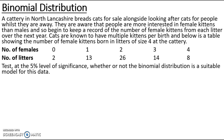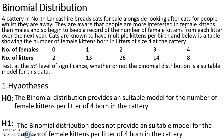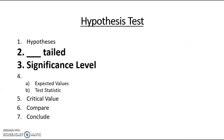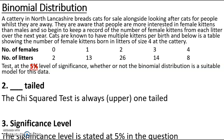Looking at our hypotheses: H0 is always that it's a good model, so in this case the binomial distribution provides a suitable model for the number of female kittens per litter of 4 born at the cattery. H1 is always that it's not suitable, so the binomial distribution does not provide a suitable model. The chi-squared test is always one-tailed, looking at the upper tail, and the significance level here is 5%.